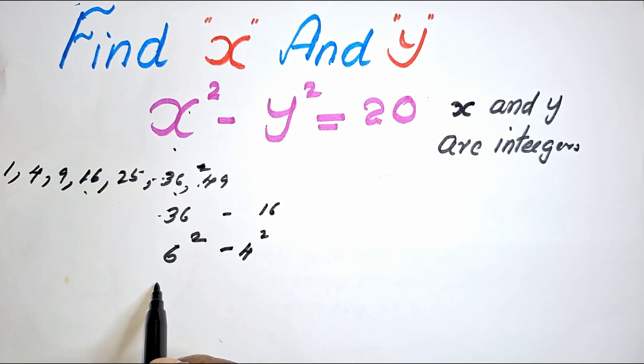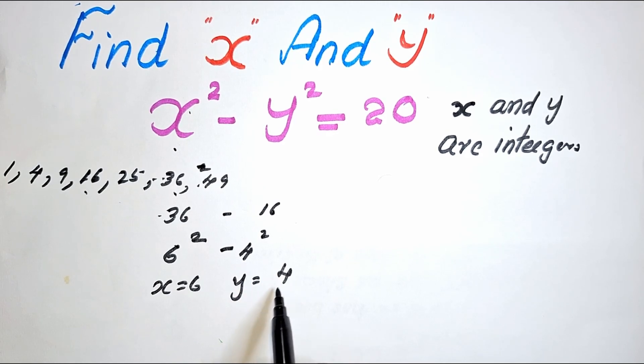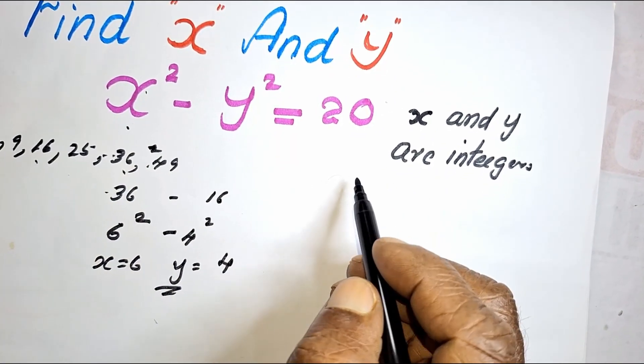That means X is equal to 6, Y is equal to 4. We can find this in another way also.